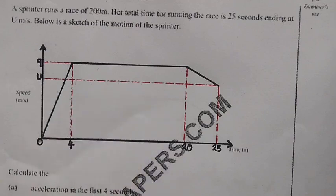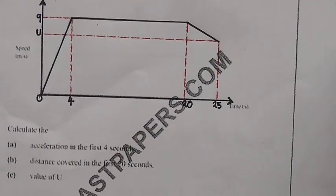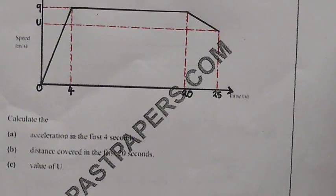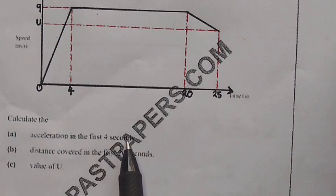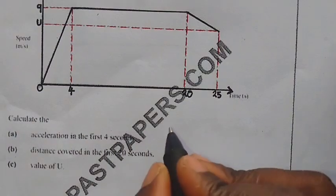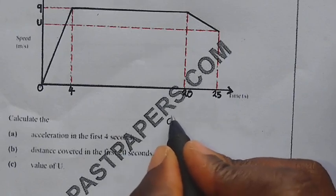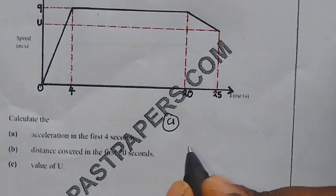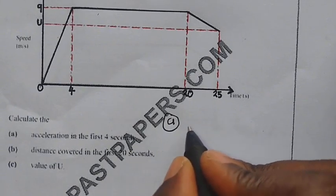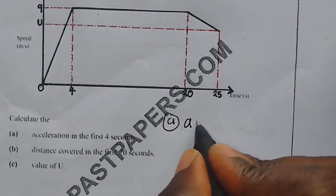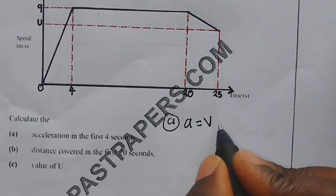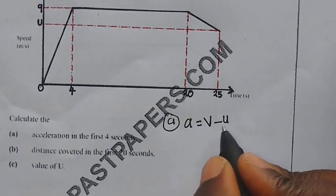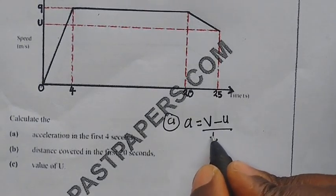Now let us look at the questions. Question A: calculate the acceleration in the first four seconds. To find the acceleration, first come up with a formula for acceleration, which is: acceleration is equal to final velocity minus initial velocity over time.